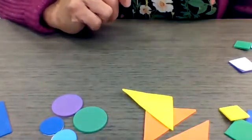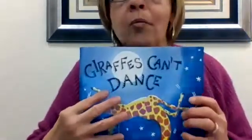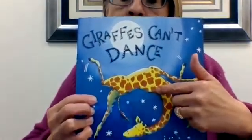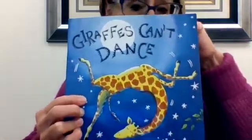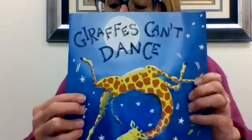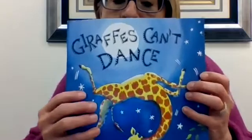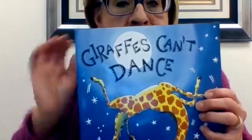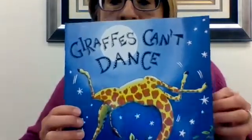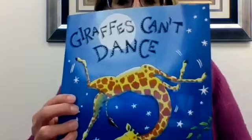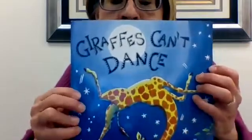Now we're going to reread the book Giraffes Can't Dance. Instead of reading all of the book, we're going to talk about what happened. Do you remember what happened in the book? The giraffe's name was Gerald. Gerald didn't know how to dance, so he was really sad, and he went away. When he went away, he was looking up at the moon and heard somebody whisper in his ear: 'You just need to listen to your own music.' And Gerald started listening to his own music, and then Gerald learned how to dance.